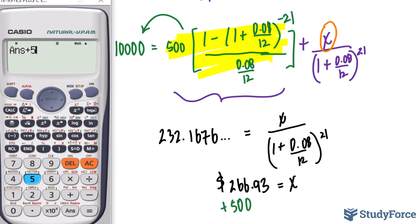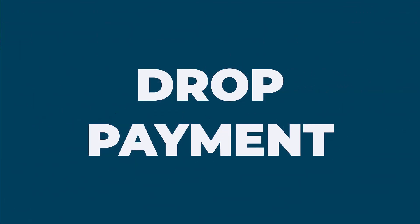So the sum of this plus 500 makes our final balloon payment. Let's go ahead and add 500 to that, round it to two decimal places. Our last payment would be 766.93. So that's a balloon payment.